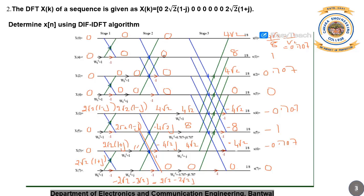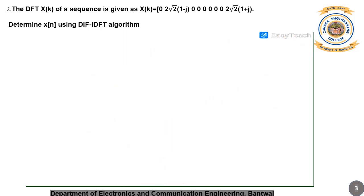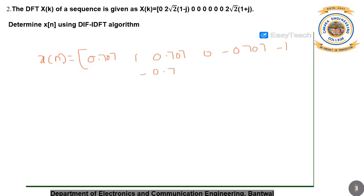The values on the rightmost side are the x(n) values. So x(n) is equal to: 0.707, 1, 0.707, 0, minus 0.707, 0. These are the x(n) values.